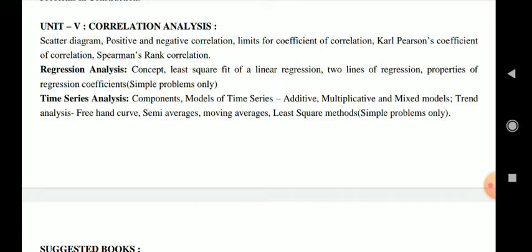Unit Five covers correlation analysis. We will study scatter diagrams, positive and negative correlation, limits of the coefficient of correlation, Karl Pearson's coefficient of correlation, and Spearman's rank correlation. We will also study regression analysis — the concept of regression, how it can be applied, the least square method, best fit of a linear regression, two lines of regression (x on y and y on x), and properties of regression coefficients. Only simple problems have been asked for this section.